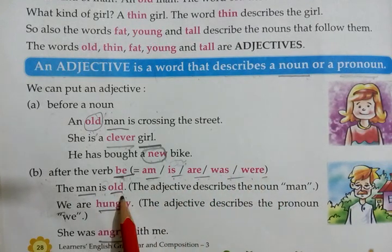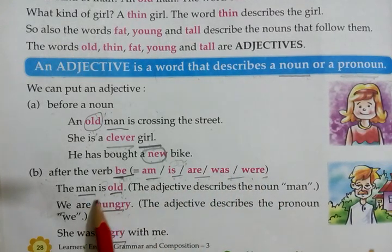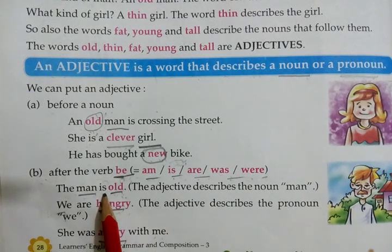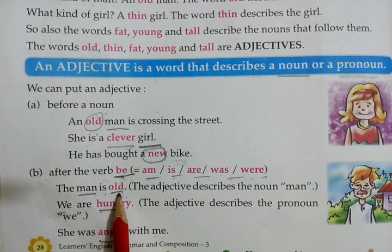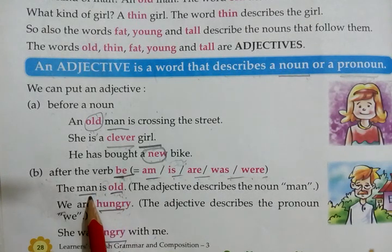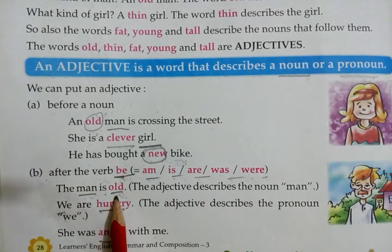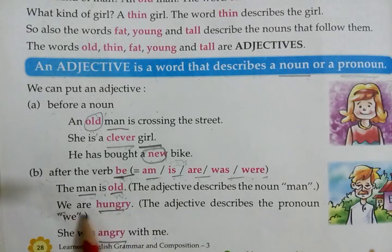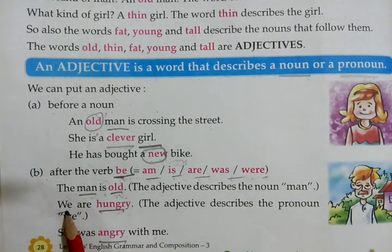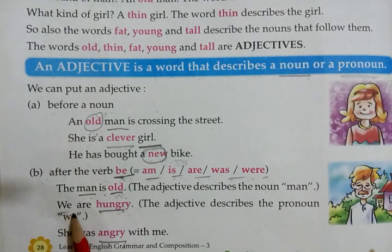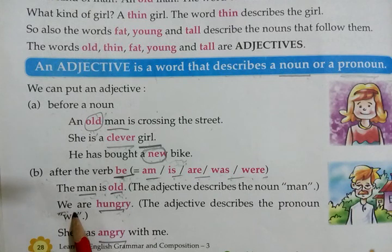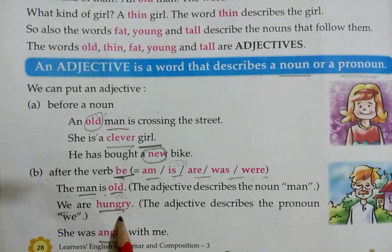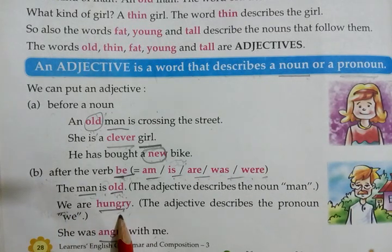Second, adjectives can be used after be verbs (is, am, are, was, were). 'The man is old.' Here, 'is' is the be verb, and old comes after it — old describes the noun man. Old is adjective. 'We are hungry.' We is pronoun — hum kaise hain? Hungry, bhuke. Hungry describes the pronoun, so hungry is adjective.